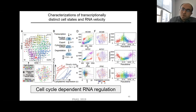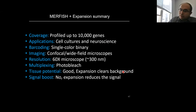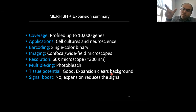MERFISH plus expansion summary: up to 10,000 genes in cell cultures and neuroscience; single-color binary; photo-bleaching for multiplexing; expansion clears background. A disadvantage is that expanding the cell 3x or 10x reduces signal per pixel, which is a drawback, but it still worked well in their hands.